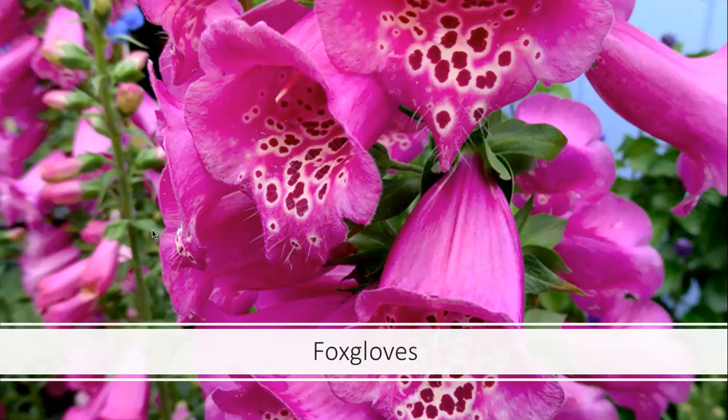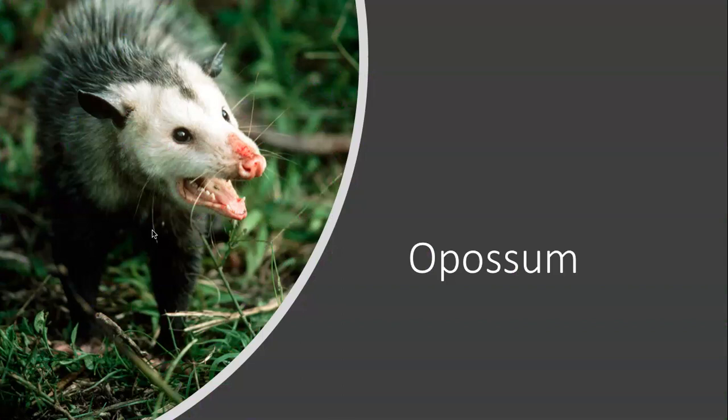Here's what a foxglove looks like. People put these in their gardens all the time — it's fine to touch them, plant them, or smell them — but if you ate one, you would be very, very violently ill and could die from it. Opossums have a chemical defense as well: when they feign death, they basically excrete a really disgusting, horrifyingly smelling green liquid. If you were even thinking about eating a possum and it did that, you would not want to put it in your mouth.